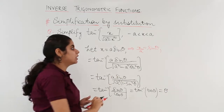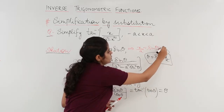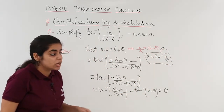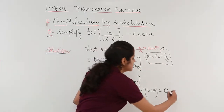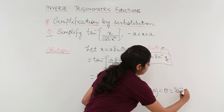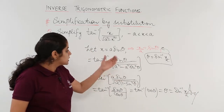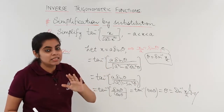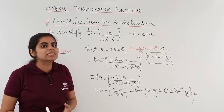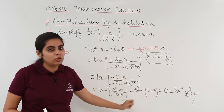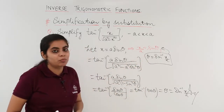From the substitution x equals a sin theta, we get x upon a equals sin theta, so theta equals sin inverse of (x upon a). Since theta is the answer, the final answer is sin inverse of (x upon a). To summarize: we substituted x as a sin theta because of the under root (a squared minus x squared) form, simplified the expression, and back-substituted theta as sin inverse (x/a).